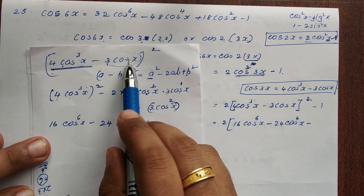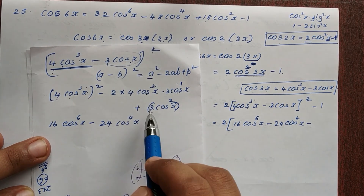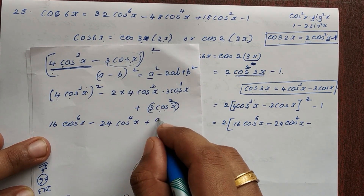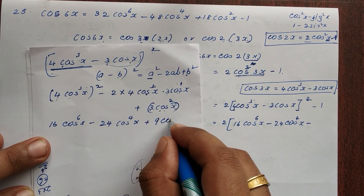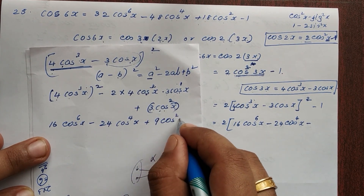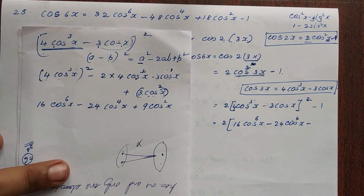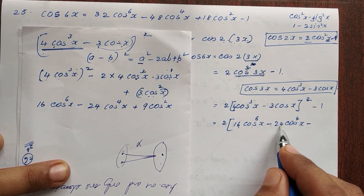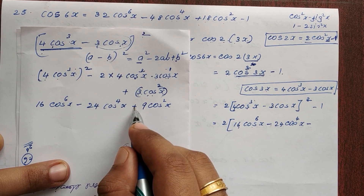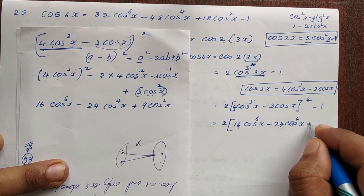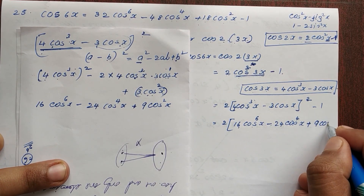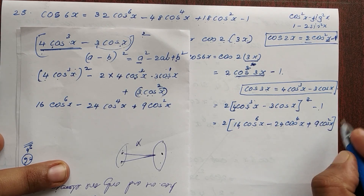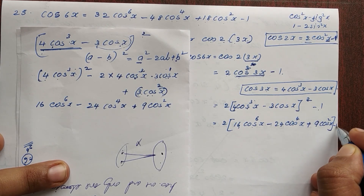That is b square — (3cosx) the whole square — that is 3 square, which is 9cos²x. So we have the expansion complete, giving cos²(3x) = 16cos⁶x minus 24cos⁴x plus 9cos²x. Then minus 1.